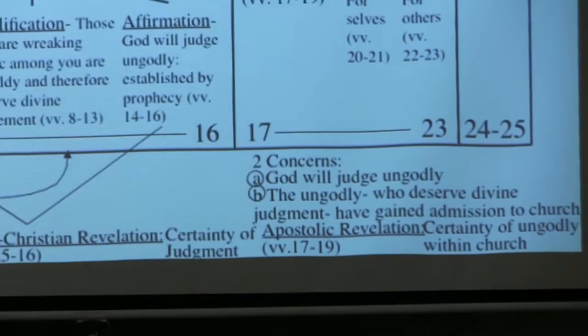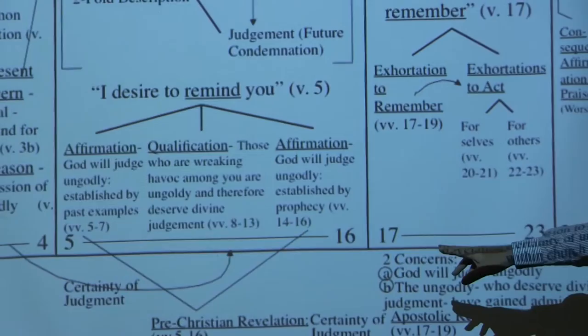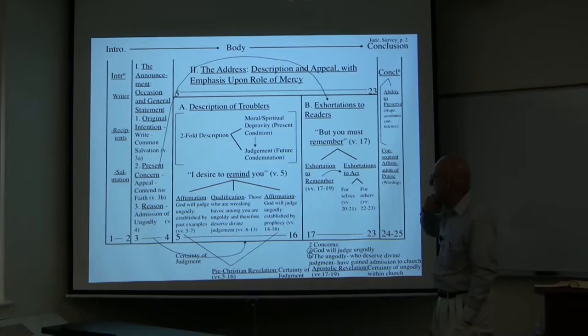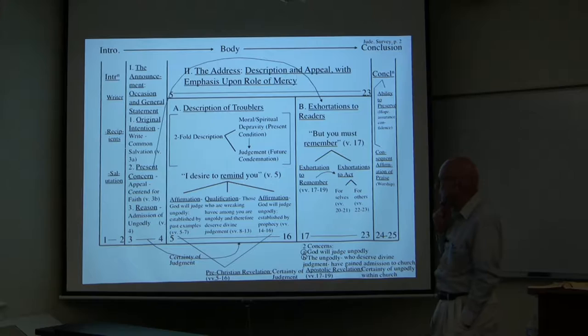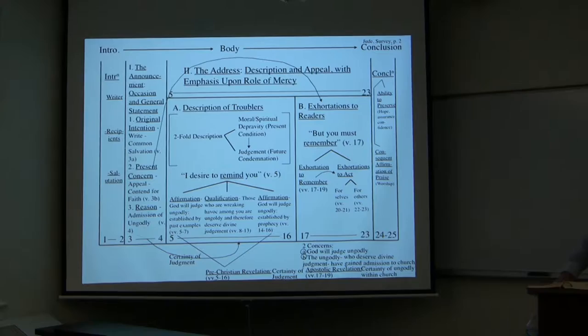In verses 17 through 23 there is a movement toward apostolic revelation, whereas the focus in verses 5 through 16 is on pre-Christian revelation using stories from the Old Testament — particularly from the Old Testament and prophecy from the Old Testament, certainly pre-Christian revelation. What he does in verses 17 through 23 is to appeal to apostolic revelation.